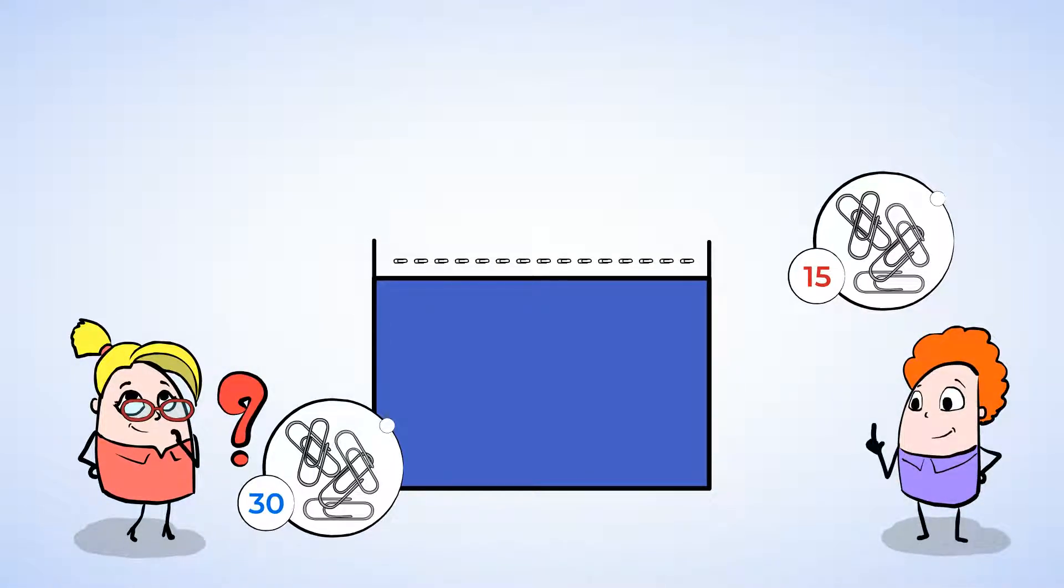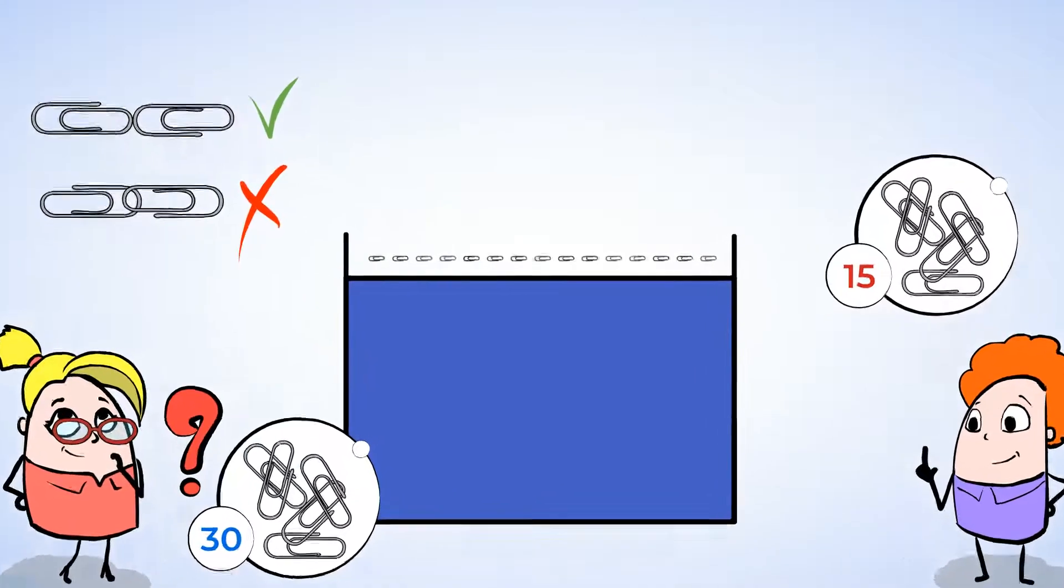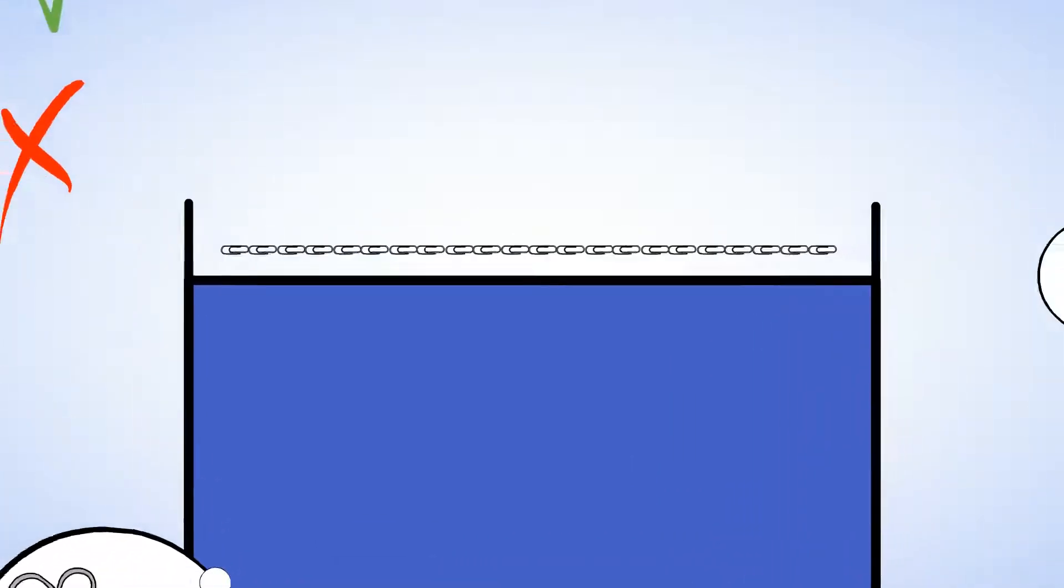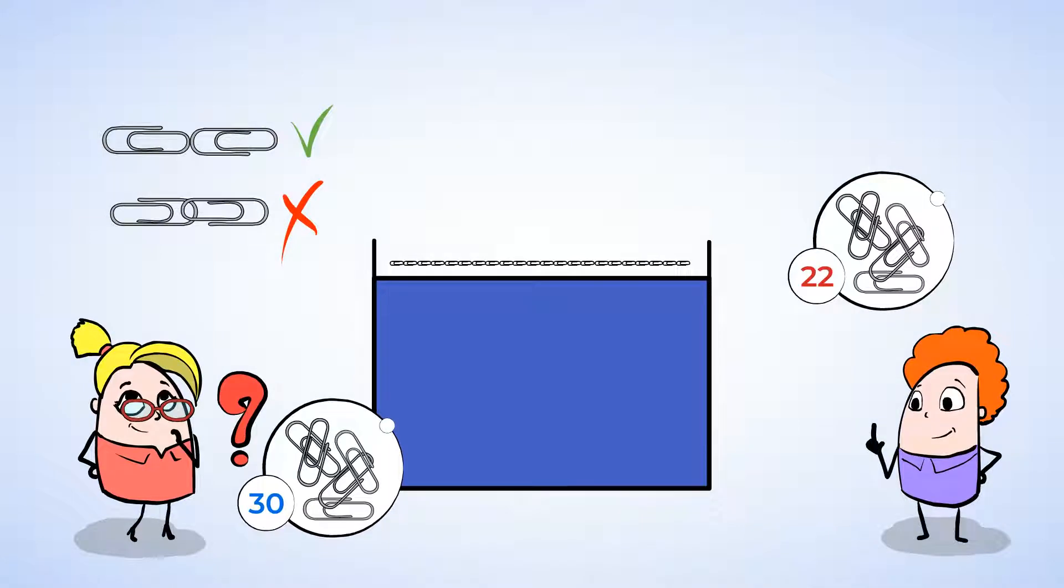So how can he fix his mistake? Well, he should try again and make sure not to leave any gaps between the other paper clips. The paper clips should touch each other, but they should not overlap. Okay, let's see how Eric did this time. Pretty good, he didn't leave any gaps. And now the desk seems to be 22 paper clips long. Huh, is he right this time?